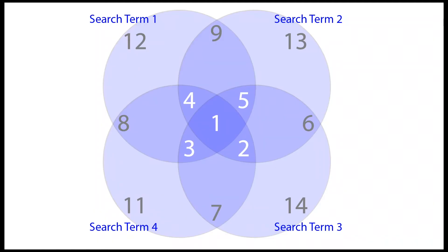In this diagram, each bubble represents one of the four search terms that you're using in Google Patents' advanced search. The place represented by area one is where all of those search terms overlap — that is probably the most fruitful place to search. But if you want to search some of the other very fruitful areas like two, three, four, and five, using the negative sign to exclude one of the search terms is what allows you to search just in that area. If you want to search just in area two, you would exclude search term one. The advantage of searching in this way is that when you're in search area two, you're going to have a unique set of results that has little or no overlap with search area one. When you individually exclude each of the individual search terms, you're going to get the results shown by areas two, three, four, and five.